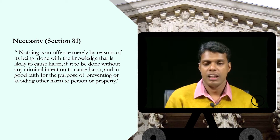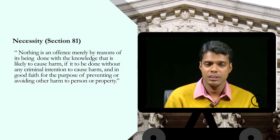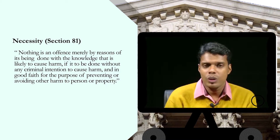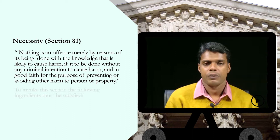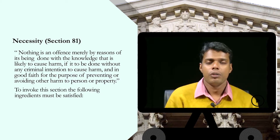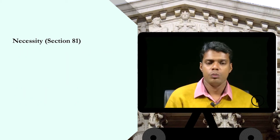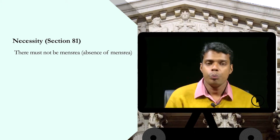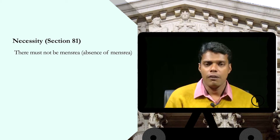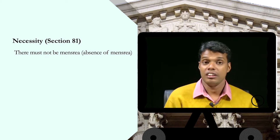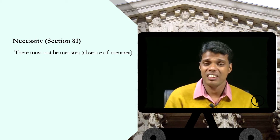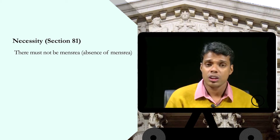That last part is very important. It says for what purpose we exclude a person from criminal liability. To invoke this section, the following ingredients must be necessary: first, the act must be done in good faith; second, there must be no mens rea; and third, the act is done in order to avoid a greater evil. These three are the essential ingredients to invoke Section 81.